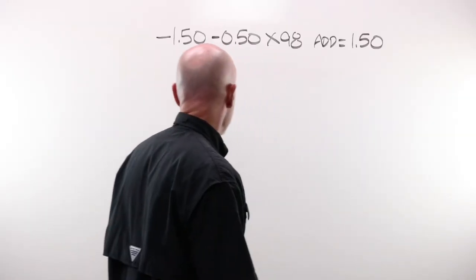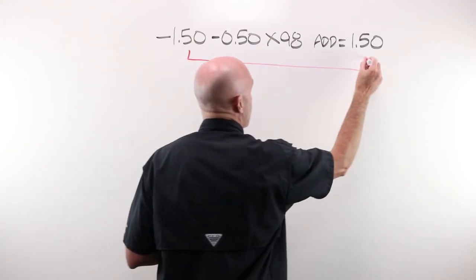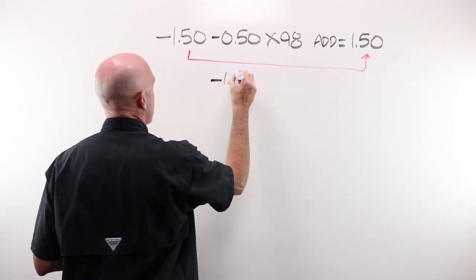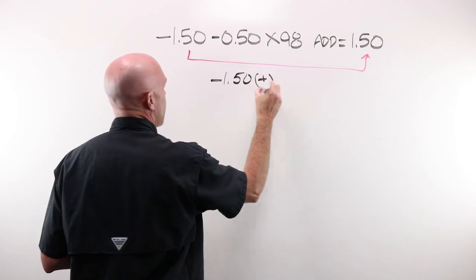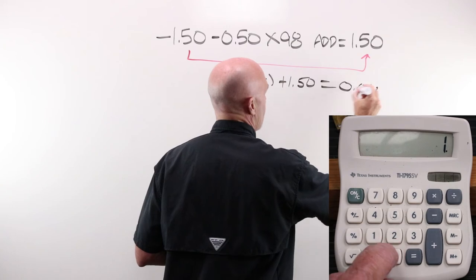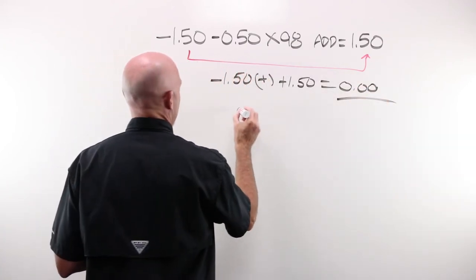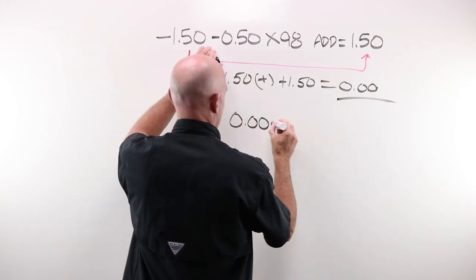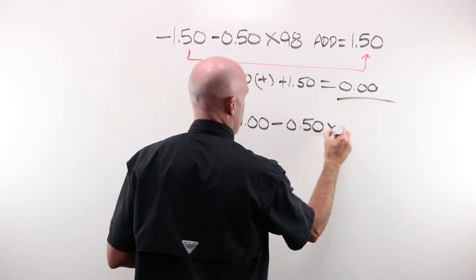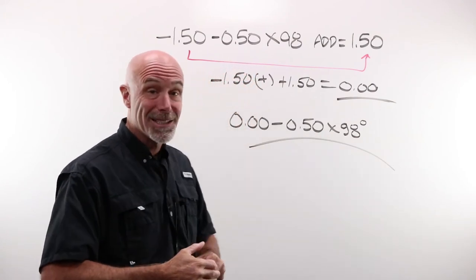Example number five tells us that we are going to add our sphere power to our add power. Remember, if I have a minus 1.50 and I add a plus 1.50, I end up at plano. Yes, that is correct. That is okay. This person will be wearing a single vision reader of plano, minus 0.50 at 98 degrees. And they would be happy as they could be.